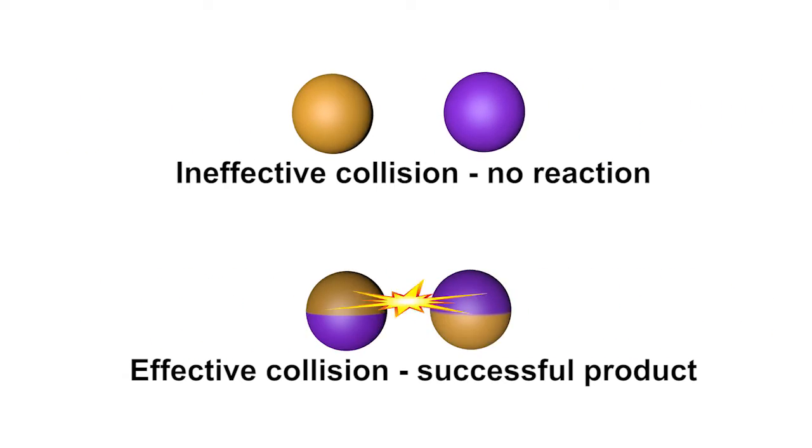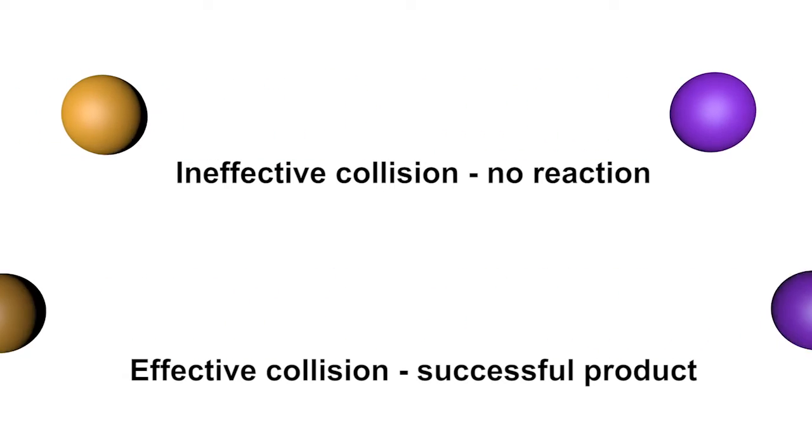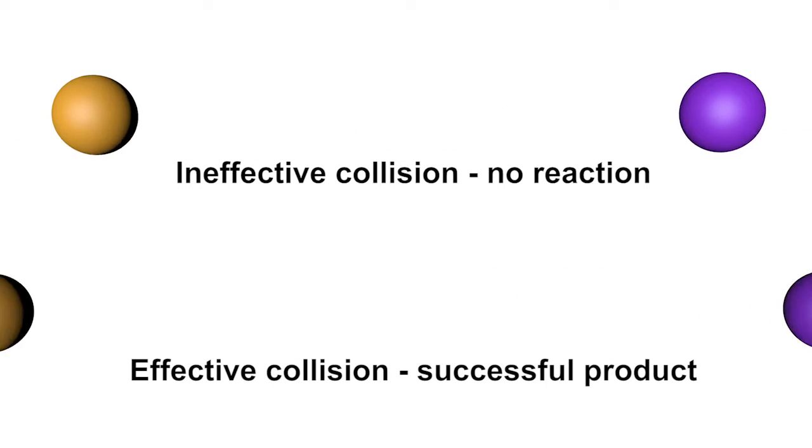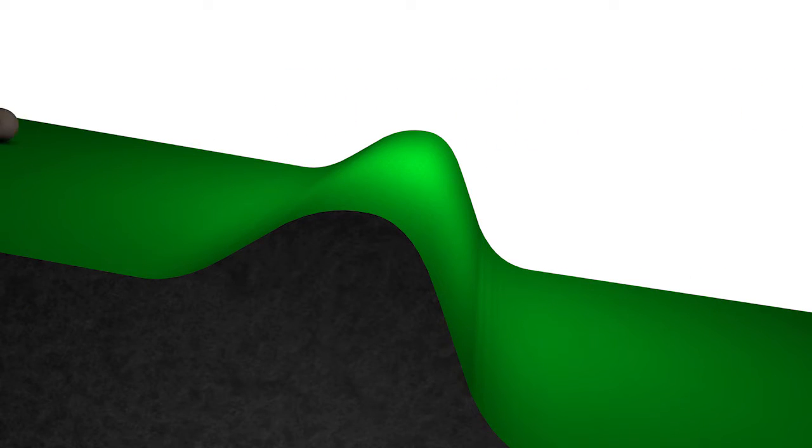In order to break existing bonds to create new bonds for the product, the reaction must have enough activation energy. Activation energy is the required energy needed for a reaction to occur. For example, in order for a large rock to roll down a hill, the person must first put in enough energy to get the rock over the bump.